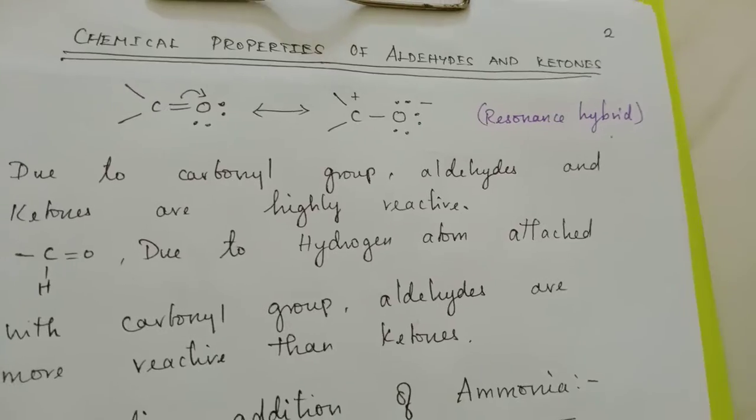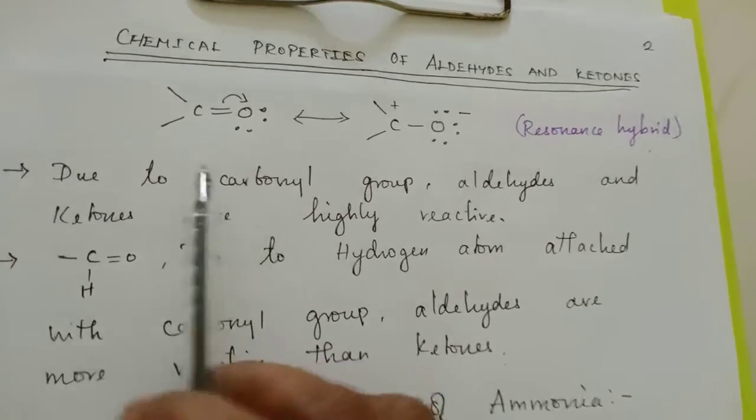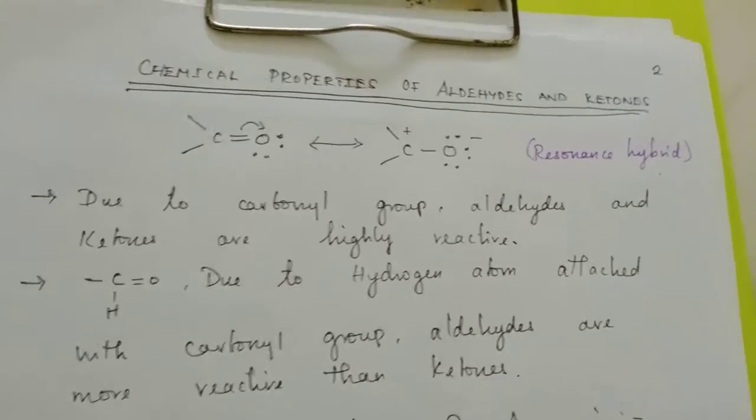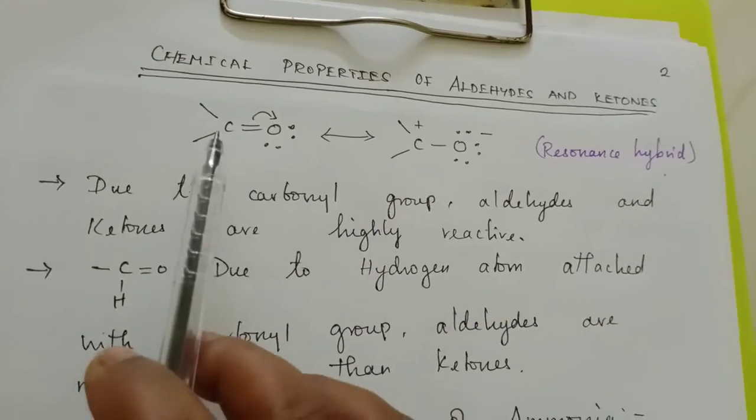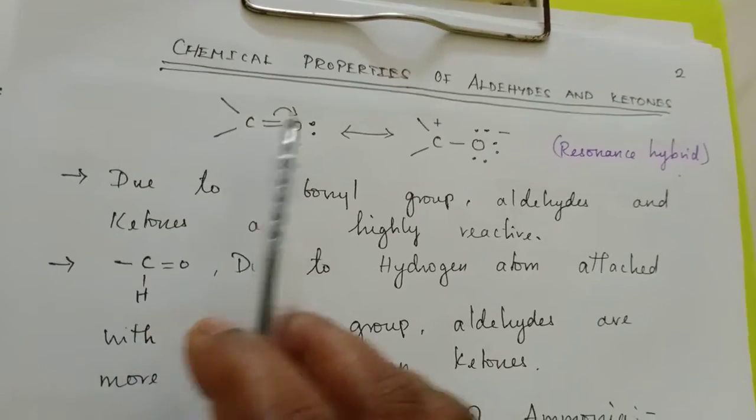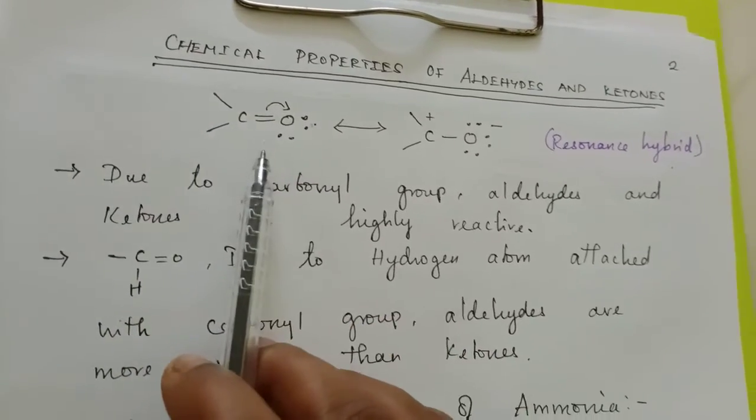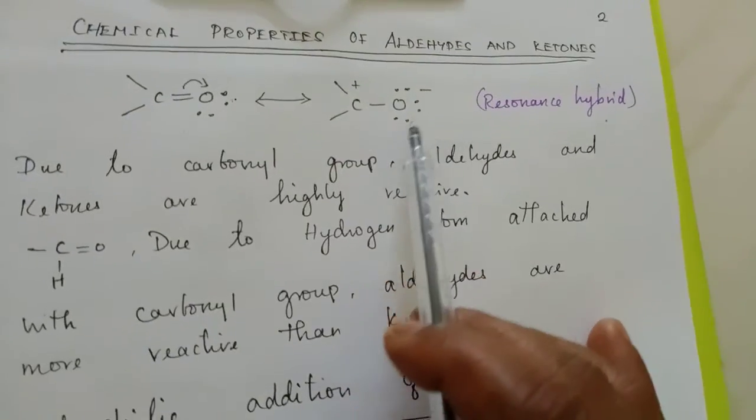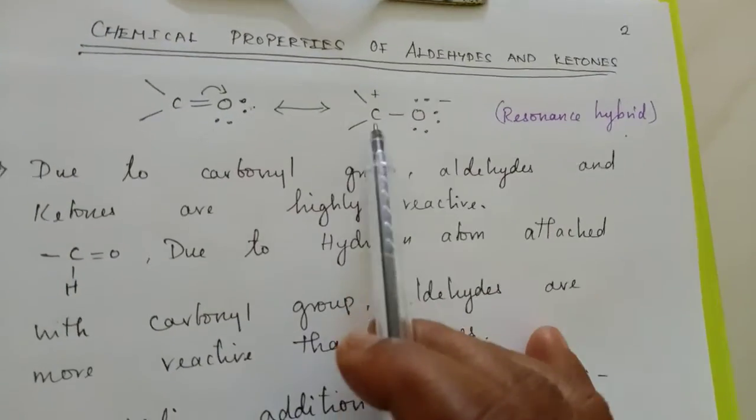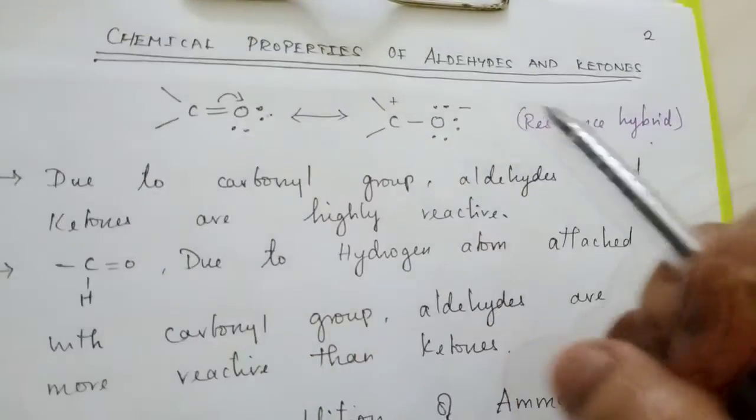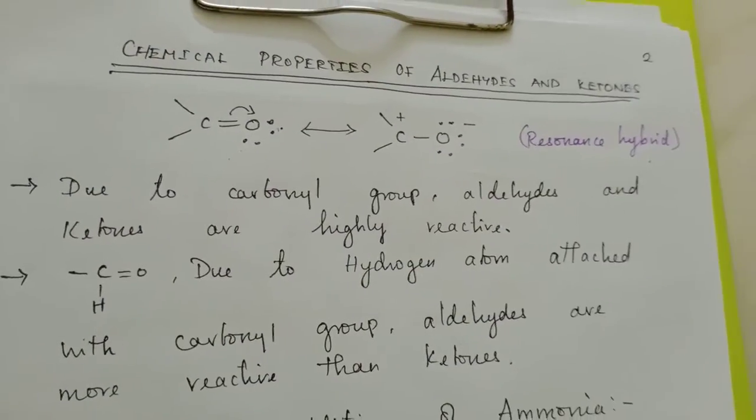Ammonia with aldehydes and ketones. If you see the resonance hybrid, there are two canonical forms given here. Carbon with O, over here two lone pair electrons. When the electron moves to oxygen, here three lone pair electrons that makes the carbon a carbocation. Oxygen will pull the electron, so always the pull will be there, the permanent pull will be there.